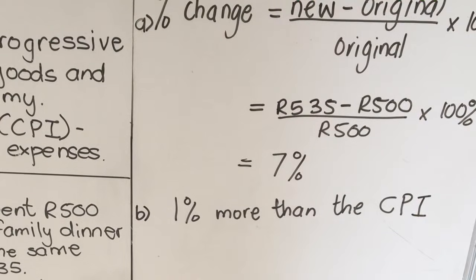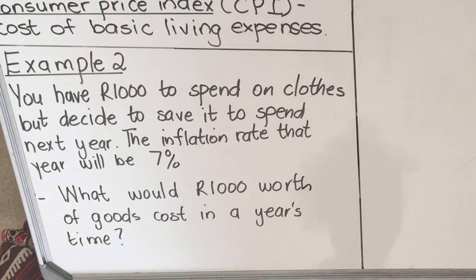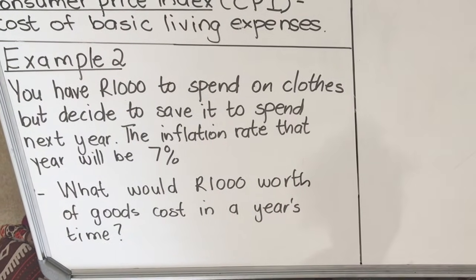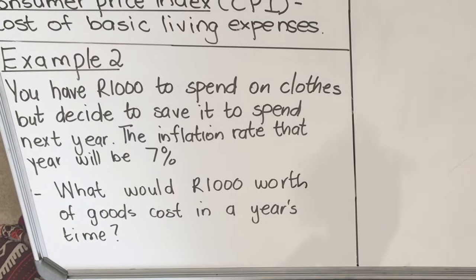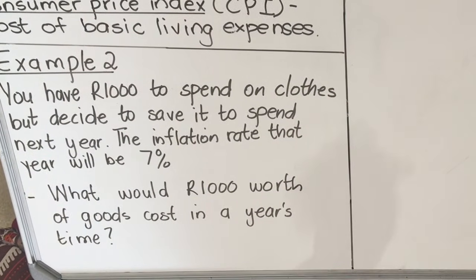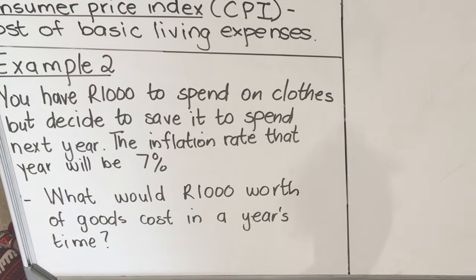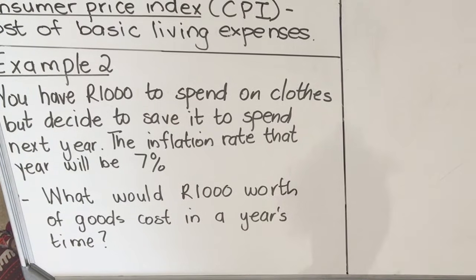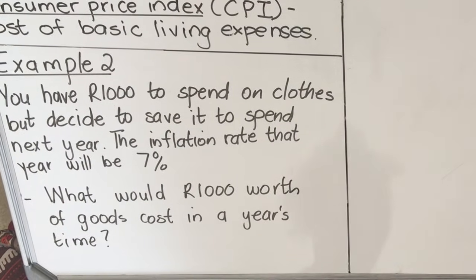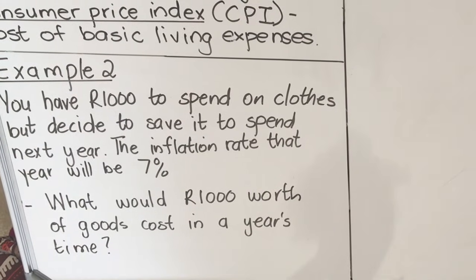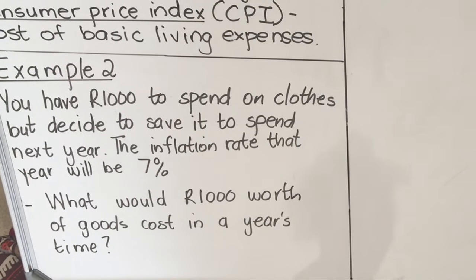Let's look at Example 2. You have 1000 rands to spend on clothes but decide to save it to spend next year. The inflation rate for the following year will be 7 percent. The question is: what would 1000 rands worth of clothes cost in a year's time if inflation will be 7 percent the following year?